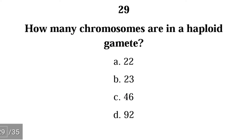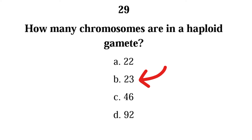Number twenty-nine: how many chromosomes are in a haploid gamete — 22, 23, 46, or 92? The correct answer is B — a haploid gamete like a sperm cell or ovum has 23 chromosomes, which is half of 46.